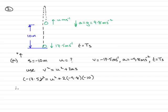So, working this out, minus 17.5 squared, if you do it on the calculator, is 306.25 equals u squared, and working this term out gives plus 196. Subtracting 196 from both sides gives u squared equals 306.25 minus 196, and that comes to 110.25.